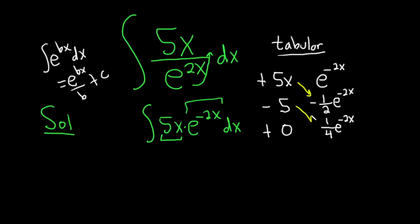So it'll be negative, let's see, 5x times this will be negative 5 halves, x, e to the negative 2x. And then this will be negative 5 times 1 fourth, so negative 5 fourths, e to the negative 2x. And then we have our constant of integration, capital C.